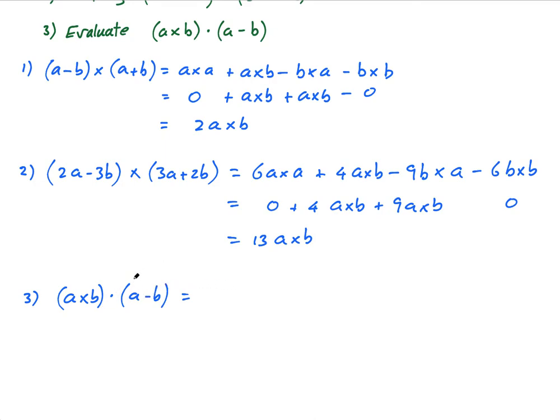So using the scalar product properties, I can say this is equal to (a cross b) dot a, and there's a minus here, so minus (a cross b) dot b.